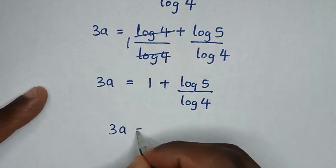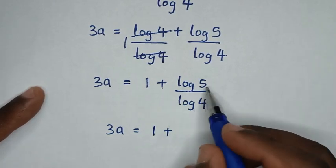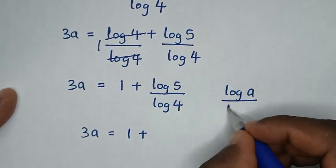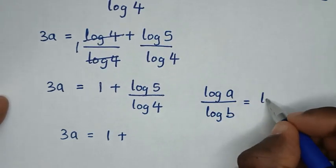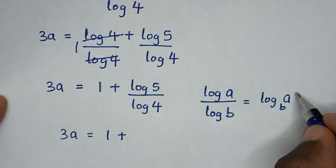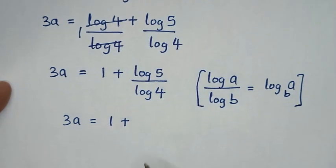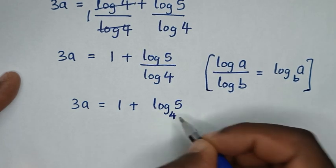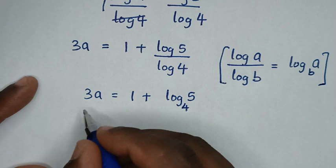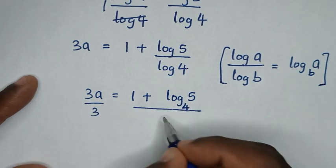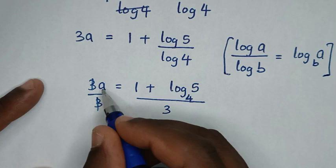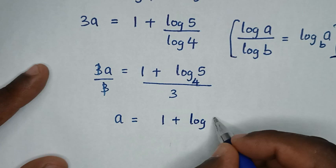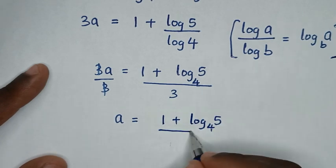So 3a equals 1 plus log of 5 over log of 4. Now log of 5 over log of 4 is in the form of log of a over log of b, which equals log of a base b. So log of 5 over log of 4 becomes log of 5 base 4. We then divide both sides by 3, giving a equals 1 plus log of 5 base 4, all over 3.